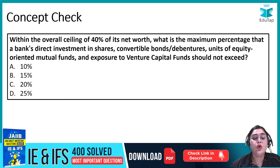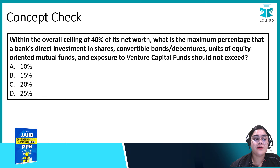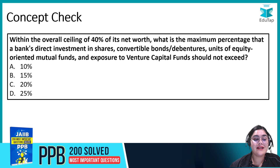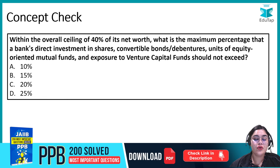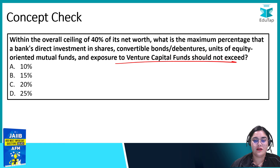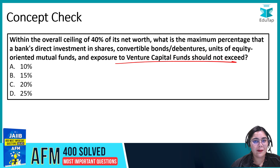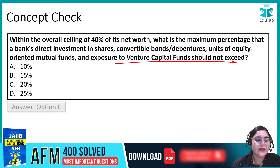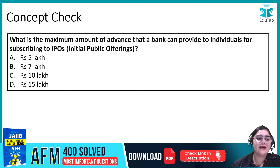The next question: Within the overall ceiling of 40% of its net worth, what is the maximum percentage that a bank's direct investment in shares, bonds, venture units, equity mutual funds, and exposure to venture capital funds should not exceed? The answer is C — 20% of net worth.